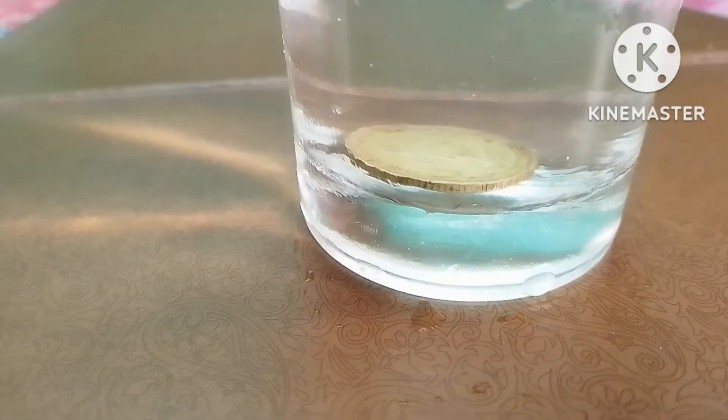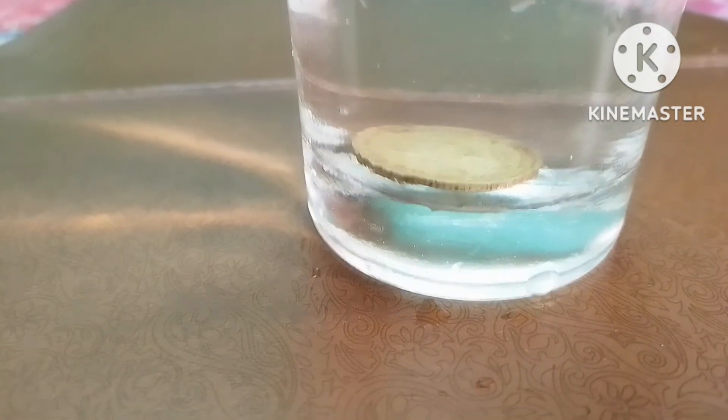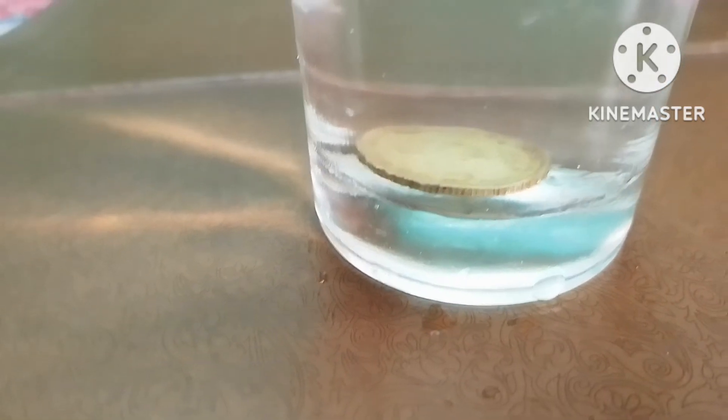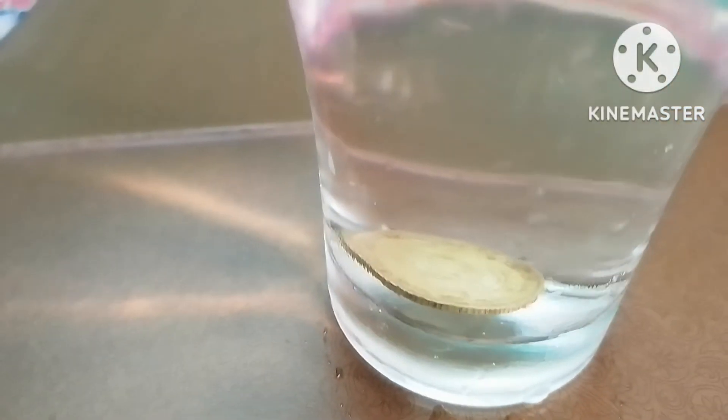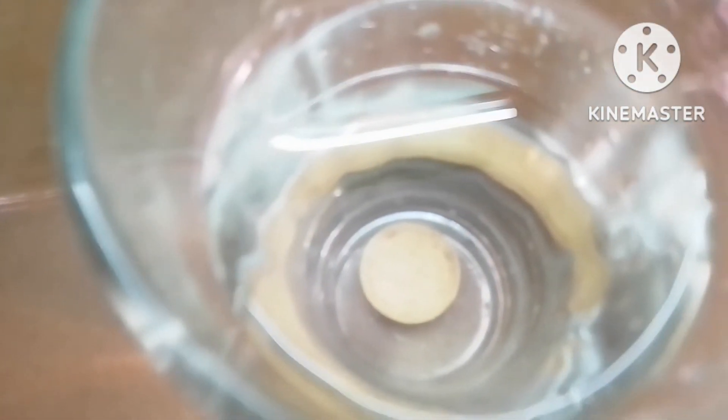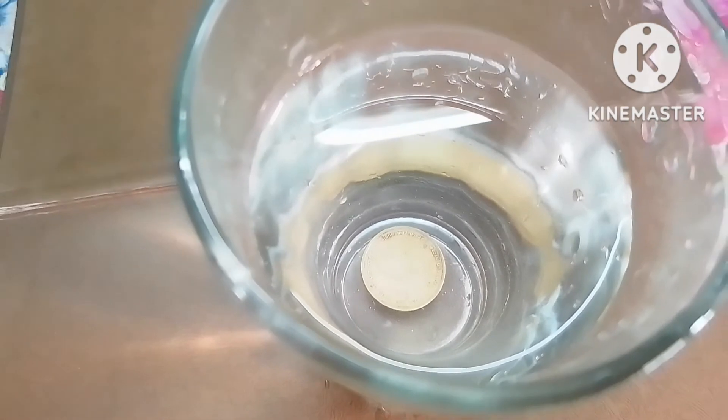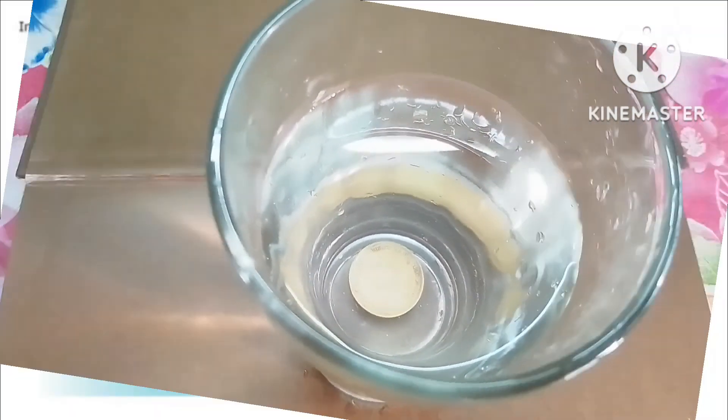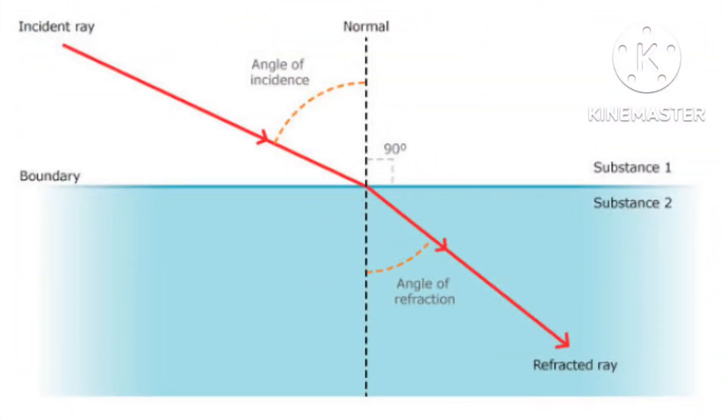This is also an optical illusion and it happens due to the refraction of light. Now let's discuss how refraction of light creates these kinds of visual illusions. Normal is the imaginary straight line perpendicular to the surface.